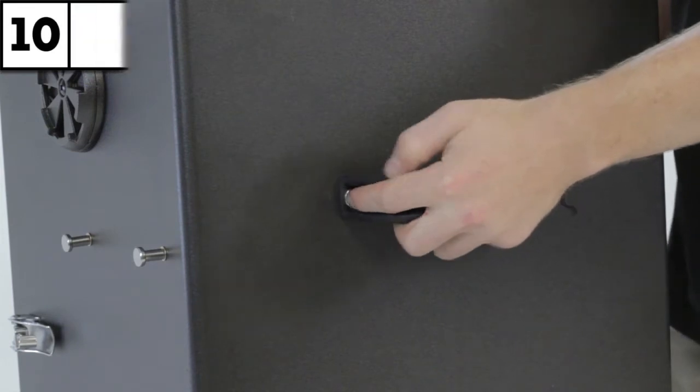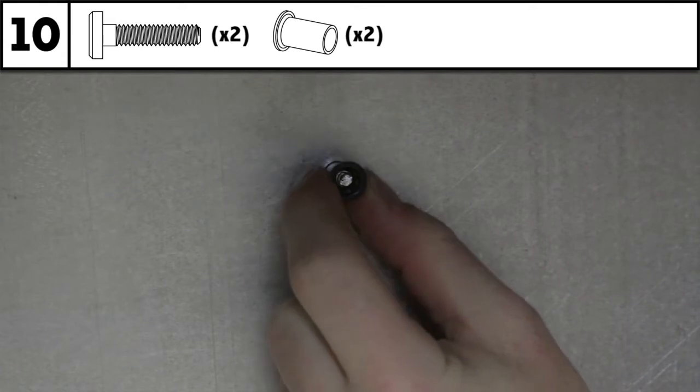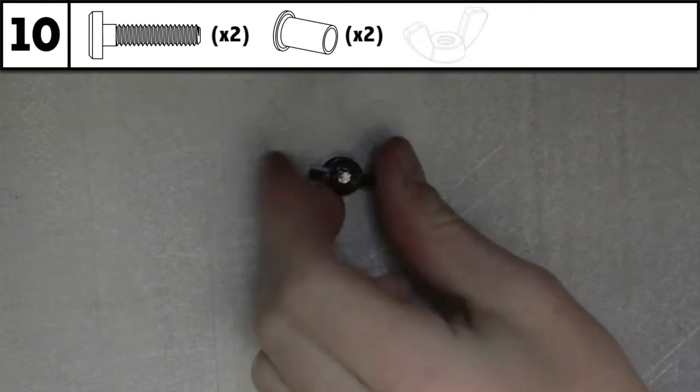Attach the mobility handle using the two chrome headed bolts. Insert the bushings onto the bolts and secure the handle using the wing nuts provided.